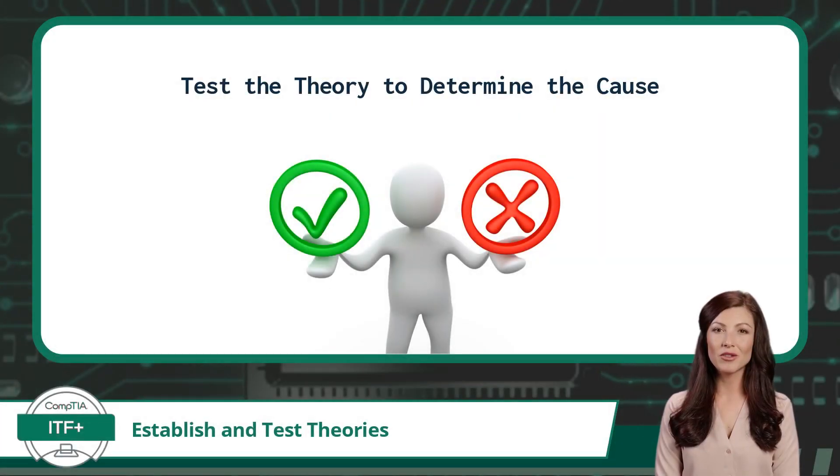Testing a theory will require some kind of experiment or action to confirm the cause of an issue. This can include changing out a component for a known good component or performing an experiment on a test system.